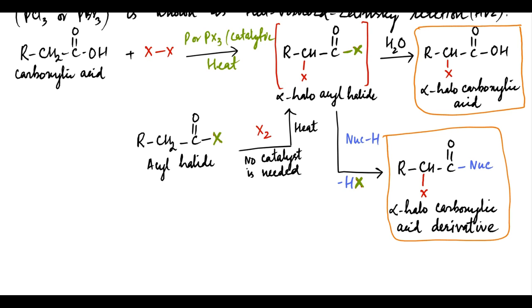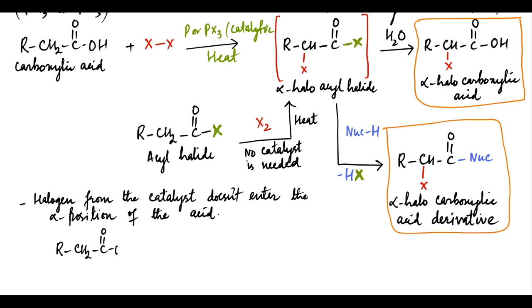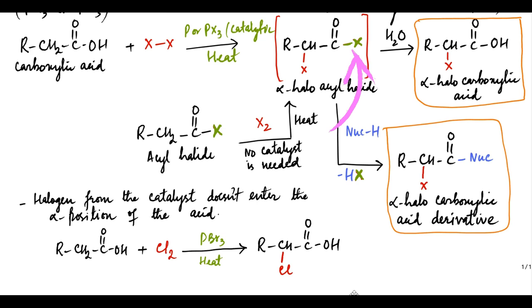The halogen from the catalyst does not enter the alpha position of the acid. For example, when a carboxylic acid is treated with chlorine in the presence of phosphorus tribromide, the product has chlorine at the alpha position and not bromine. This confirms that halogen from the catalyst doesn't enter the alpha position. Elemental halogen is depicted in red color and catalyst in green. The halogen in red enters the alpha position, and the green halogen from the catalyst replaces the hydroxyl group of the acid to change it into acyl halide.